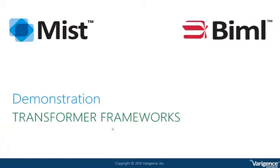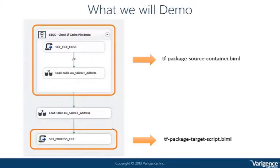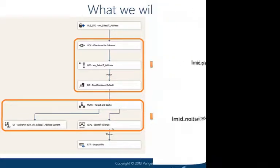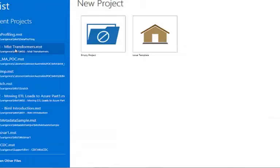Before starting the demo, here's the plan. First, we take the sequence container and put it into a BIML file called tf_package_source_container.biml. Next, we take the script component that does the process file and put it into tf_package_target_script.biml. Then in the data flow, we strip out the top section before the multicast into tf_package_source_lookup (the lookup components), and strip out the multicast with the cache transformation into tf_package_target_destination. What we'll be left with is only the source component and the raw file destination.